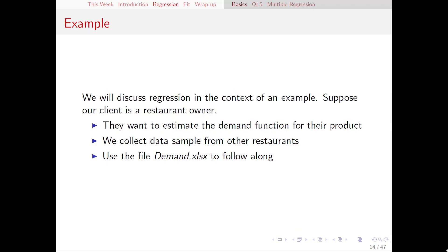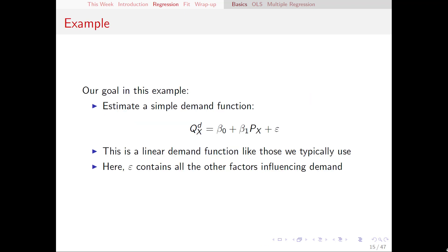I'm going to frame our whole discussion in the context of an example. Suppose that we have a client who is a restaurant owner who wants to estimate the demand function for their product. We're going to help them out by collecting a data sample from various other restaurants serving similar products, and then we'll try to come up with an estimated demand function. To follow along, make sure you've got the demand.xlsx Excel file ready to go. The demand function we're going to estimate has our dependent variable quantity of x demanded, and on the right-hand side we've got beta naught plus beta1 px, where px is our explanatory variable, and then epsilon, our error term, which contains all the other factors that might influence quantity demanded that are not price. q here is our y and px is our x.